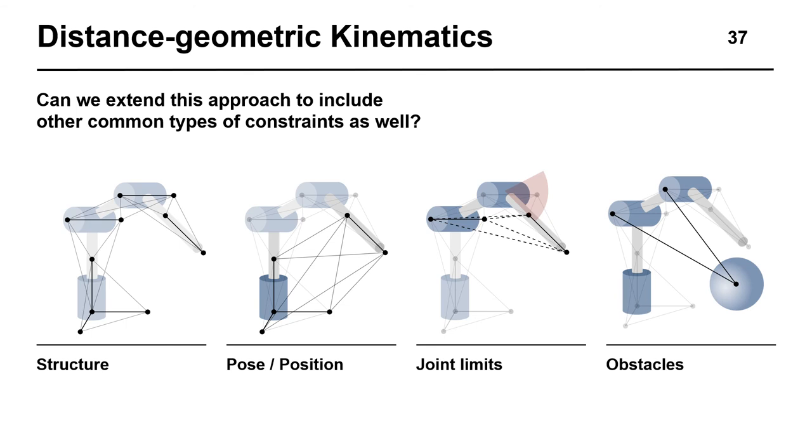Earlier, we also asked whether this approach can be extended to include other constraints. In our work, we showed that this approach seamlessly allows for a variety of constraints, such as link poses, positions, and symmetric joint limits. Perhaps most notably, obstacles can be included as concatenations of spheres defined as points whose distances from the robot are lower bounded.